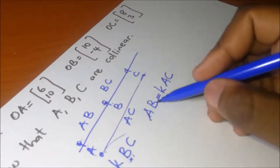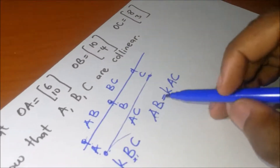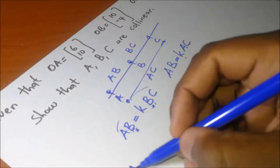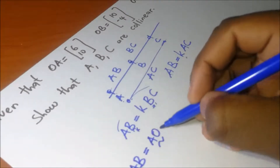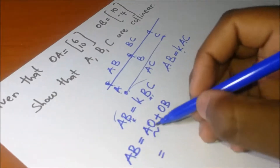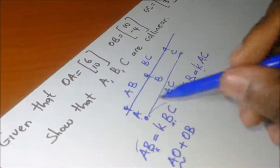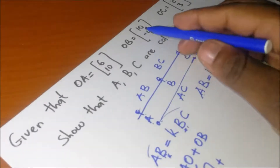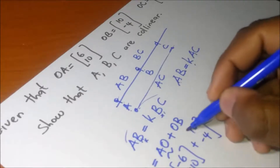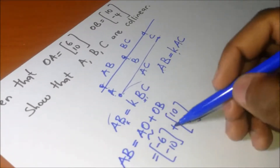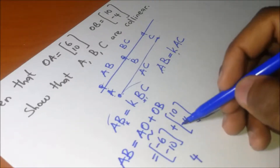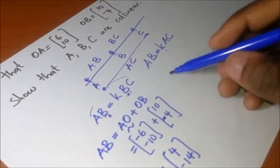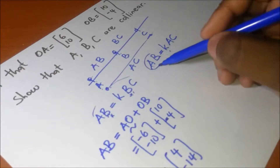We first find AB. AB = AO + OB. OA is (6, 10), so AO is (-6, -10). OB is (10, -4). Adding: -6+10 = 4 and -10+(-4) = -14. So vector AB is (4, -14).